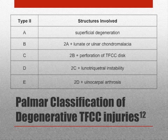This table displays Type 2, or degenerative/chronic injuries to the TFCC due to normal aging and arthritis. This is a continuum — for example, Type 2B includes Type 2A, and Type 2D includes Type 2C. A is the least severe, while E is the most severe or progressive.